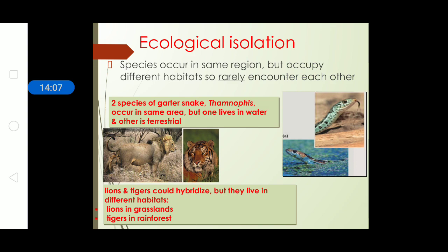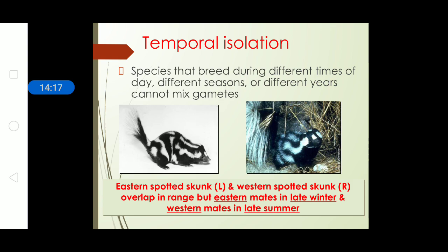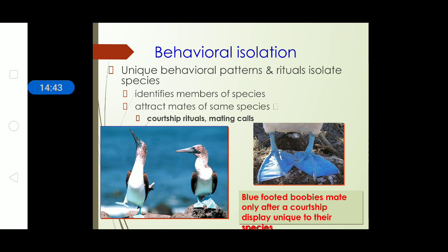In ecological isolation, lions and tigers are not able to hybridize because lions stay in grasslands while tigers stay in rainforests, though they can mate if brought into close vicinity. For temporal isolation, the eastern and western spotted salamanders overlap in the same range but cannot mate because the eastern is reproductively active during late winter while the western is active during late summer. In behavioral isolation, the blue-footed boobies mate only after a courtship display unique to their species.